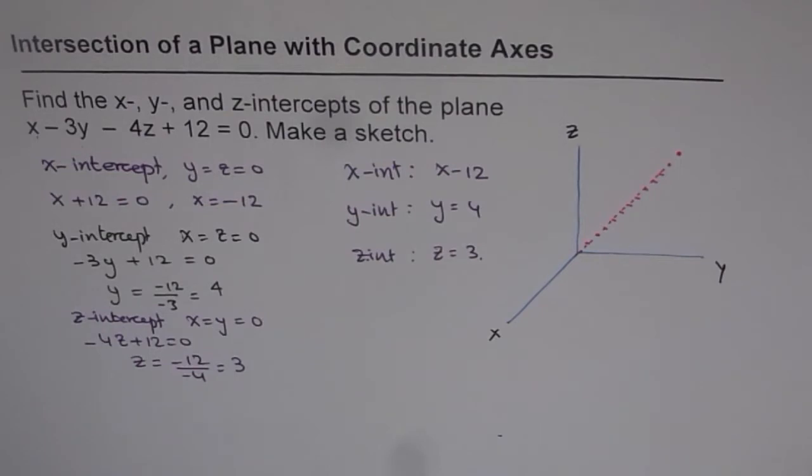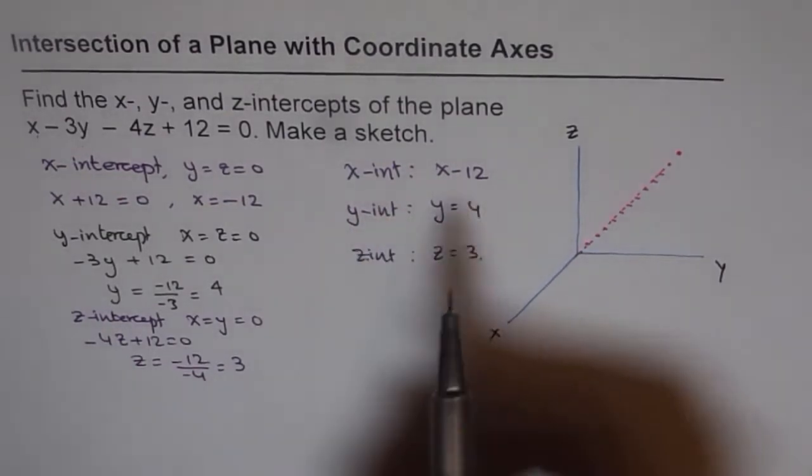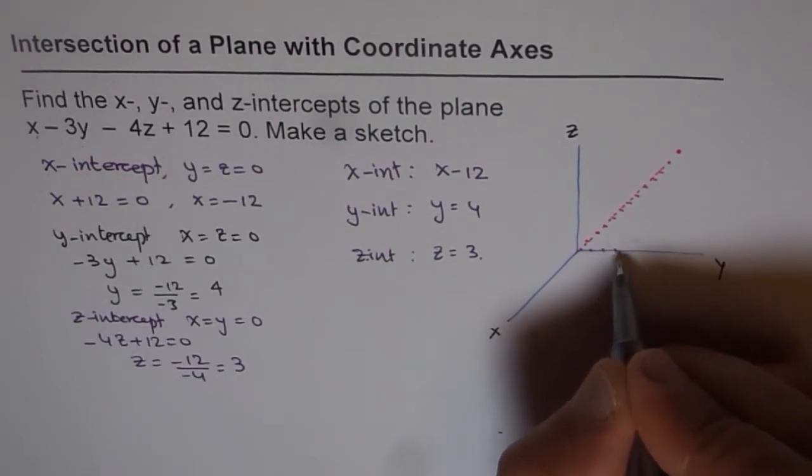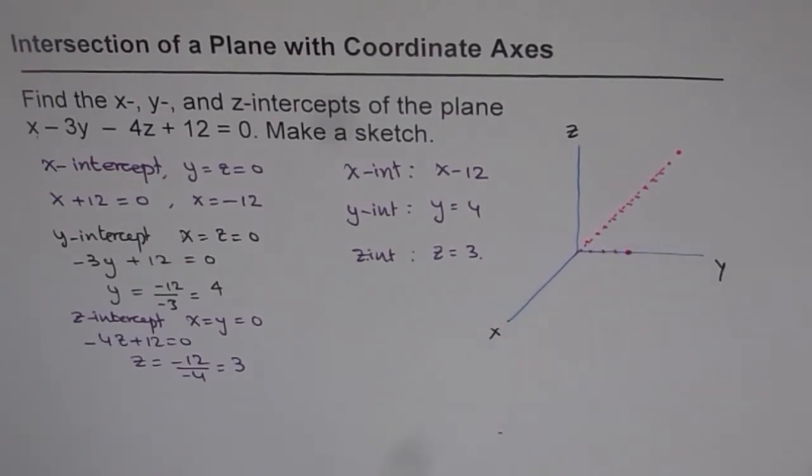And now, let's point out where is the y-intercept? 4. So 4 will be in this direction: 1, 2, 3, 4. So that is the y-intercept.